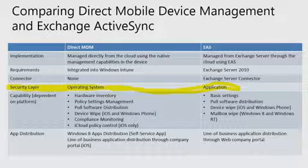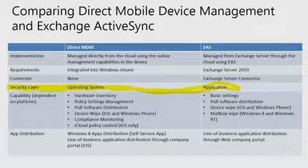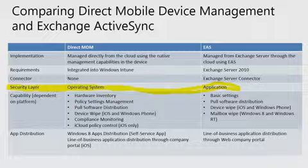In contrast, we've got a very similar set of capabilities through EAS. Some of the settings are not quite as powerful. We can't do the iCloud configuration, for example. That's built just into the Intune platform. But we still manage software distribution and can wipe device-wide on platforms that support it. In addition, because they're going through the email client, there is the capability to wipe mailbox data, and that's crucial to a lot of organizations.